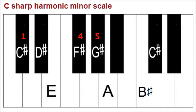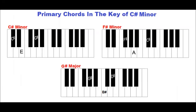Notes 1, 4, and 5 are C-sharp, F-sharp, and G-sharp. The 1st primary chord is minor, the 2nd is minor, and the 3rd is a major chord.